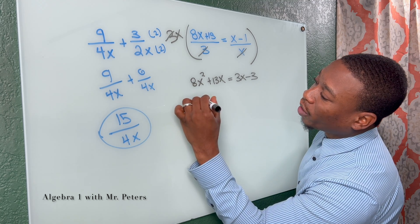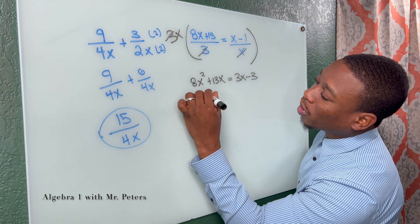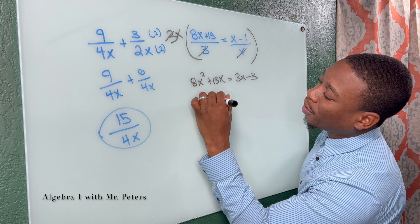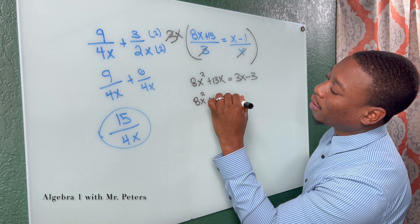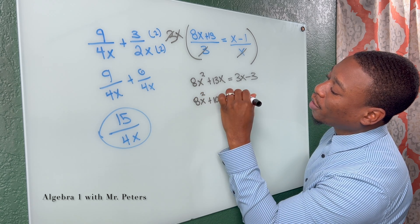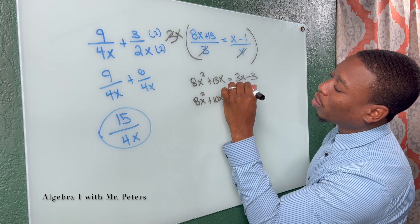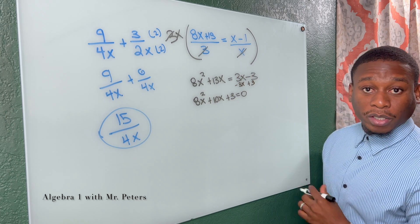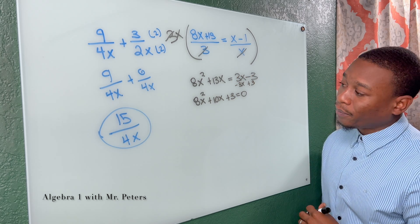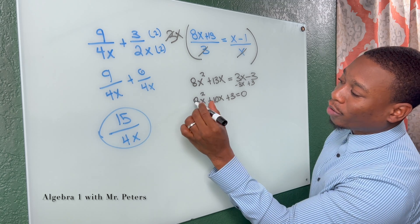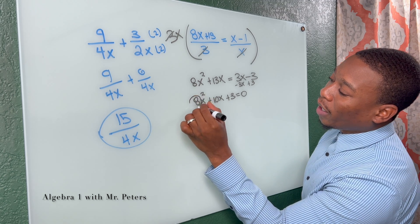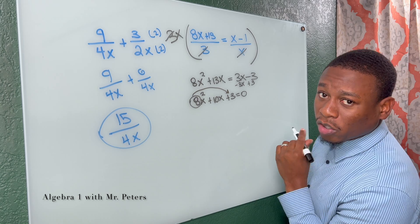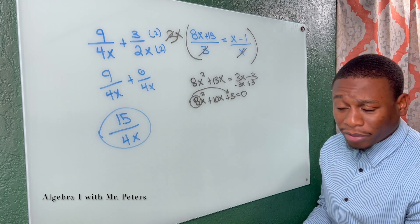So now that we have a quadratic, we're going to set this equation equal to zero. 8x squared plus 10x plus 3 is equal to 0 — all I did was subtract 3x and add 3 to the other side. So now we're here trying to factor, but we have a leading coefficient, so I'm going to use the slip-and-slide method.